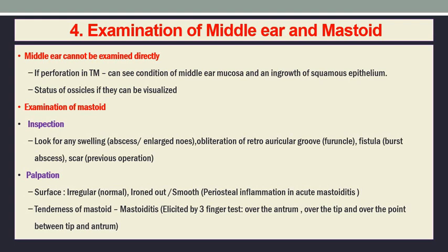For mastoid palpation, palpate the surface — which is usually irregular — and sometimes when it is smooth or ironed out due to periosteal inflammation in acute mastoiditis, there will be a smooth feel and fullness of the mastoid. This is done by a three-finger test: one finger over the suprameatal triangle, one over the mastoid tip, and one between the suprameatal triangle and mastoid tip over the mastoid cortex.